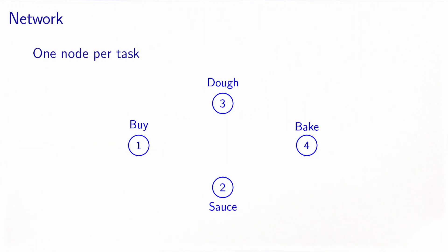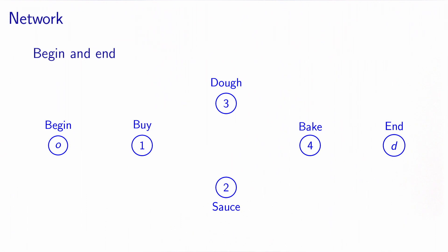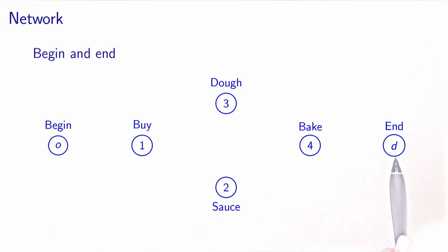We will model this problem using a network where each node represents a task. In our pizza example, we have four nodes — one for each task. We also add two extra nodes: one representing the beginning of the project, denoted O, and one representing the end, denoted D. So if we have n tasks, we have n plus two nodes in the network.